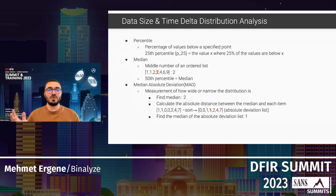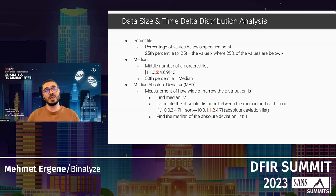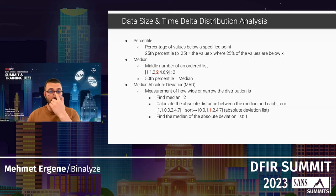Median Absolute Deviation (MAD) measures how wide or narrow a distribution is. First, find the median — shown in red on the screen. Then calculate the absolute distance between the median and every other item, generating an absolute deviation list. Sort that list from smallest to largest and take the middle value. For this example list, the MAD is just one.